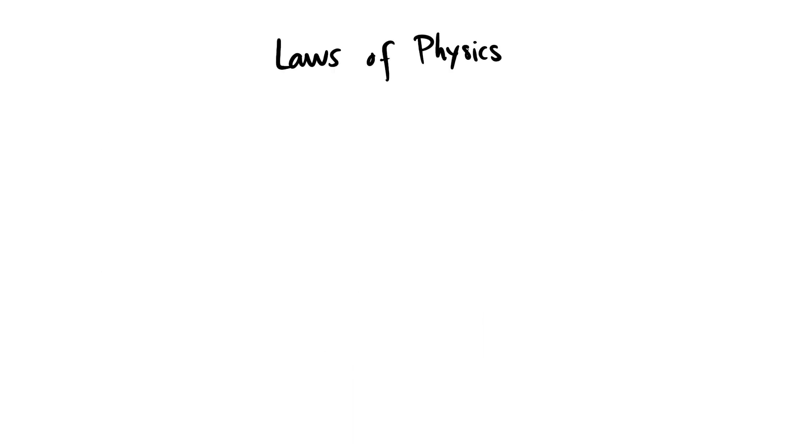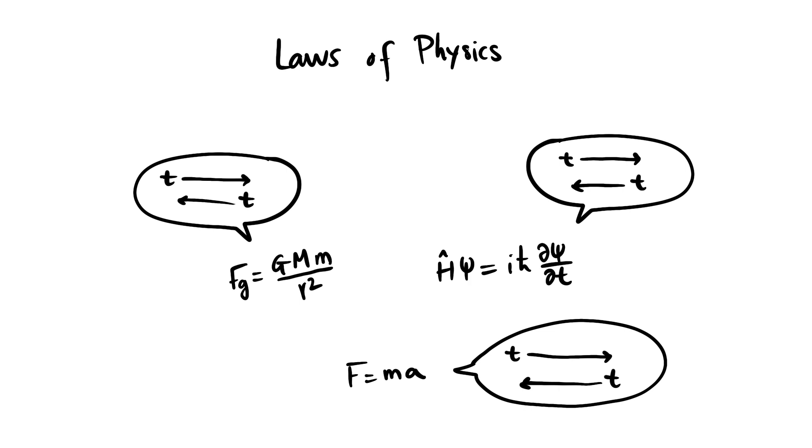The underlying laws of physics that rule the motion of individual particles are time-reversible, which means they work both if time is flowing forwards or backwards.